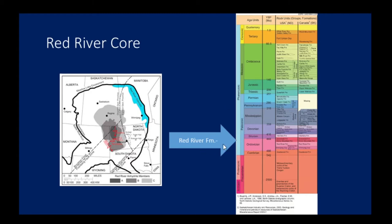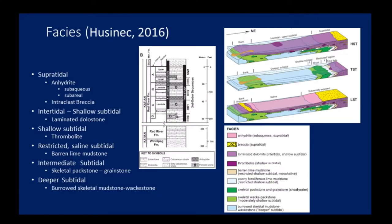Stratigraphically, the Red River is in the Ordovician, situated at this particular location within the stratigraphic column, and extends to various depths throughout the state. The core we'll be looking at is located pretty close to the center portion of the map at a depth of about 12,100 feet, and geographically and stratigraphically this is where we find the Red River for this particular core.